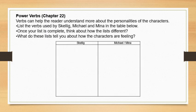For this part of the lesson I would like you to look at chapter 22 of the story and think about the verbs that are being used to describe the characters. Remember a verb is an action word, a doing word. Generally they end in -ing and they're used to describe the actions of a character. I would like you to list the verbs used for Skellig in chapter 22 and the verbs for Michael and Mina in chapter 22.